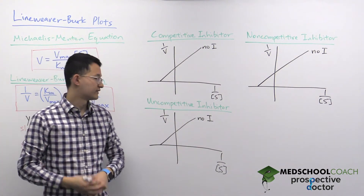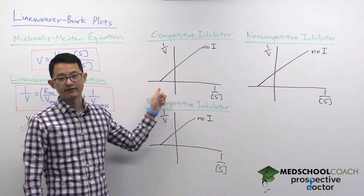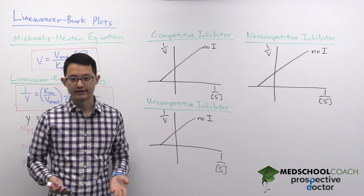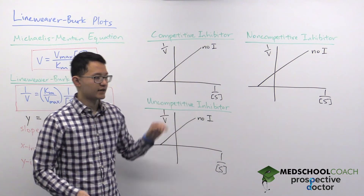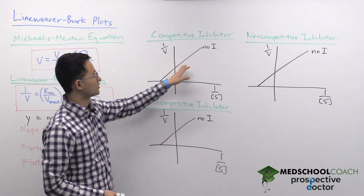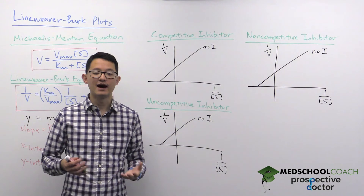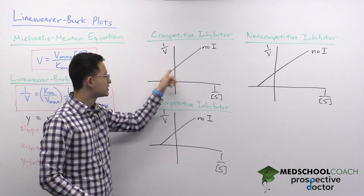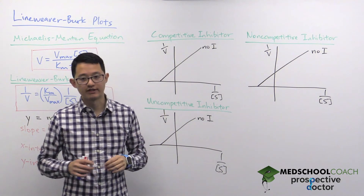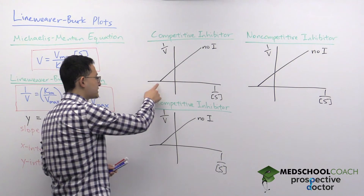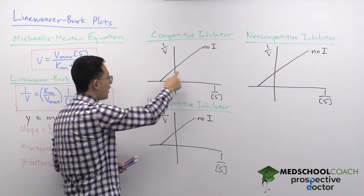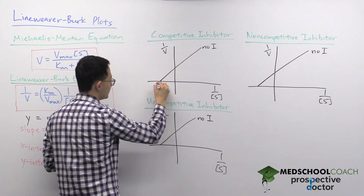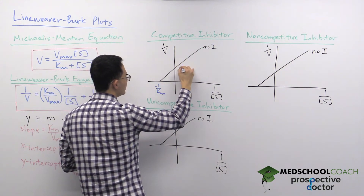The x-axis does go into negative values, but there's no such thing as negative substrate concentrations. In reality, this graph is generated by measuring initial reaction velocity at several different substrate concentrations to get several data points. Since these points lie on a linear line, they can extrapolate what the line looks like into the negative region. The x-intercept is equal to negative 1 over Km, and the y-intercept is equal to 1 over Vmax.